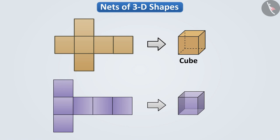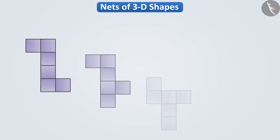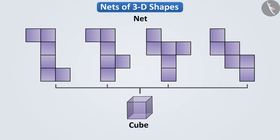In this way, we can make a cube not only from these two nets, but also from all these nets. That means, we can say that a solid can have different nets.